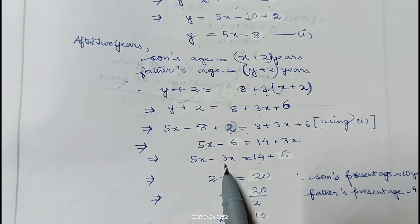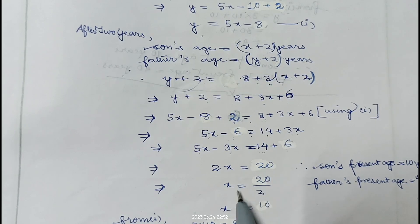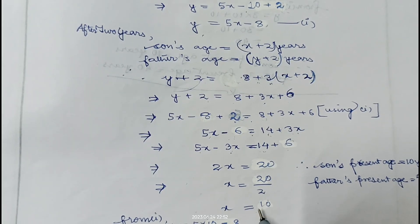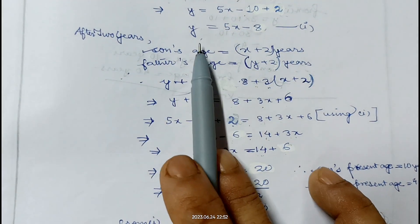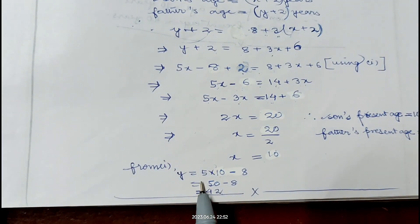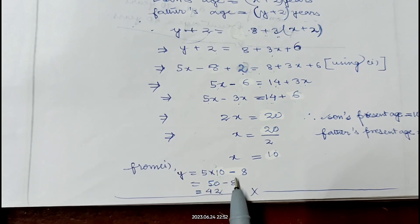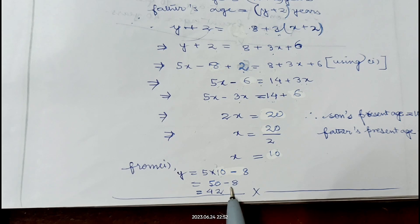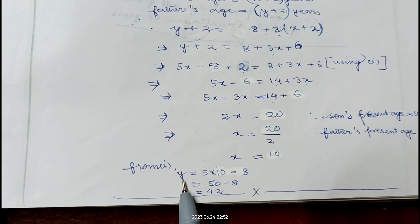So 5x minus 3x equals 14 plus 6, giving 2x equals 20, so x equals 10. From equation 1, y equals 5x minus 8, replacing x with 10: y equals 5 into 10 minus 8, which is 50 minus 8, giving 42. Therefore son's present age is 10 years and father's present age is 42 years.